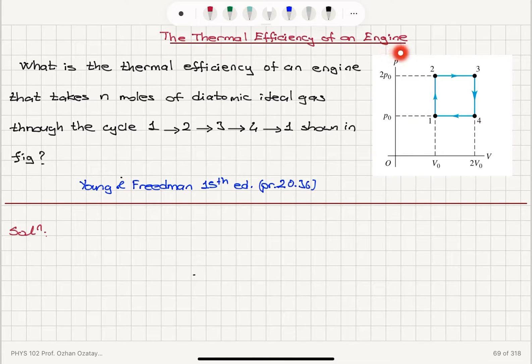The thermal efficiency of an engine. What is the thermal efficiency of an engine that takes n moles of diatomic ideal gas through the cycle 1, 2, 3, 4, 1 shown in the figure?